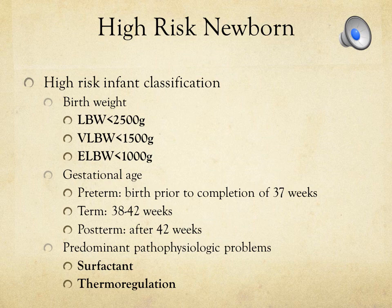Gestational age is another way to classify the newborn. Preterm is birth prior to completion of 37 weeks, so a mom who delivers at 36 weeks and 6 days has a preterm infant. Term is 38 to 42 weeks, and post-term is anything beyond 42 weeks. We generally don't want to keep the baby in beyond about 41 weeks before considering intervention.